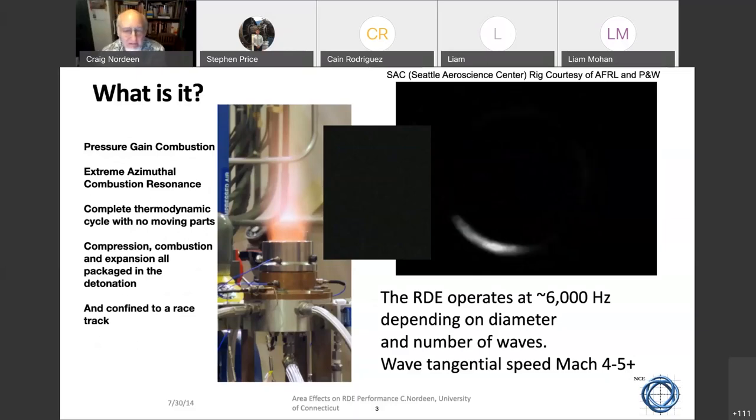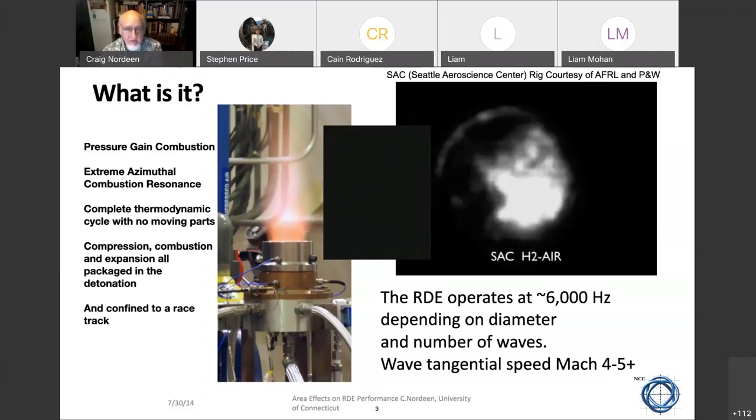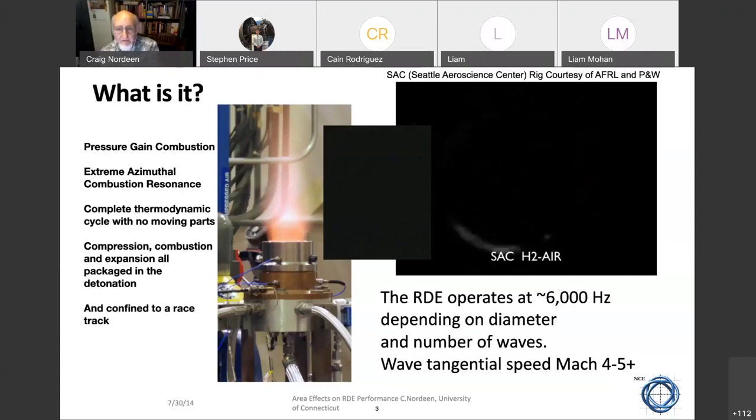That was the sound of an RDE being fired at the Air Force Research Lab. What a rotating detonation is, number one, it's a pressure gain combustion device. It's a complete thermodynamic cycle. There's no moving parts in it. We've, in a detonation wave to go around in an annulus. And as it goes, it does work on the air.